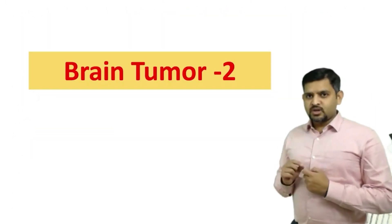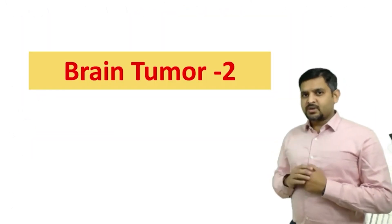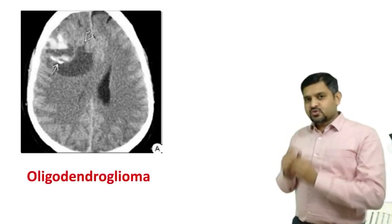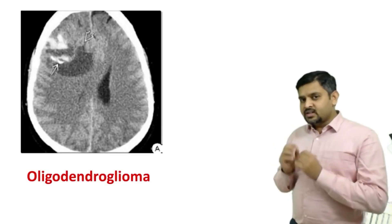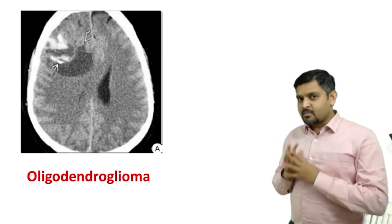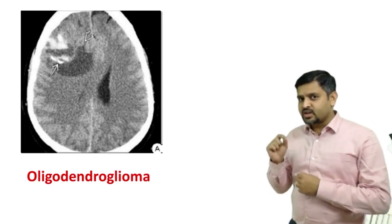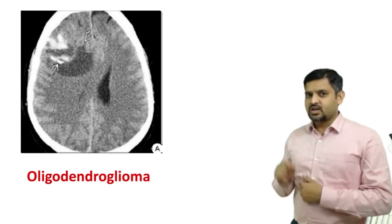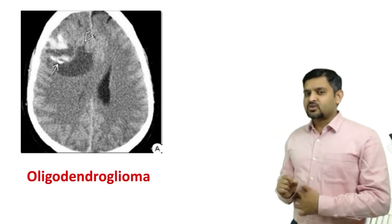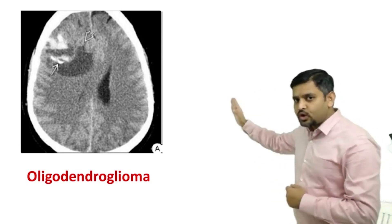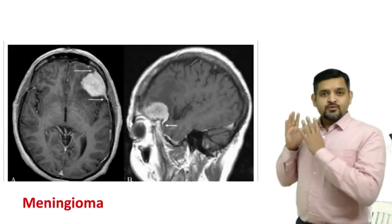Let's see some of the imaging appearances of brain tumors. If you see an intra-parenchymal mass in the frontal region which is showing calcification, the first diagnosis is always an oligodendroglioma.